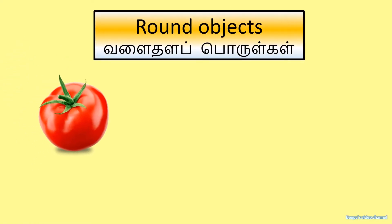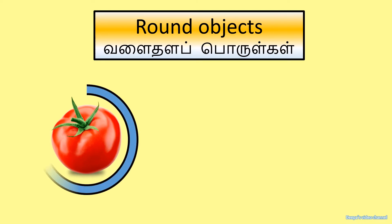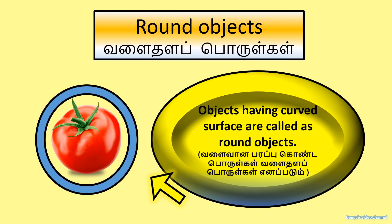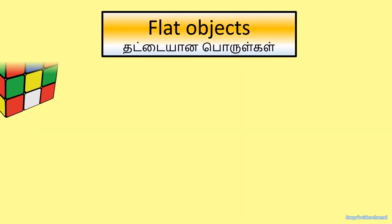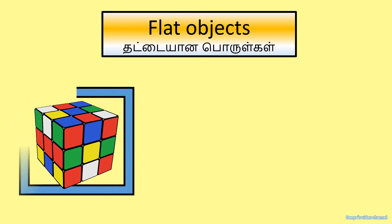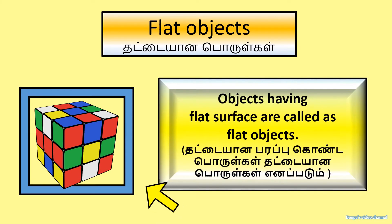Round objects. Objects having a curved surface are called round objects. Objects having a flat surface are called flat objects.